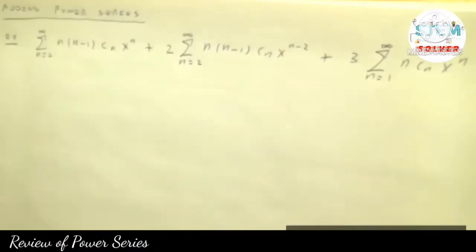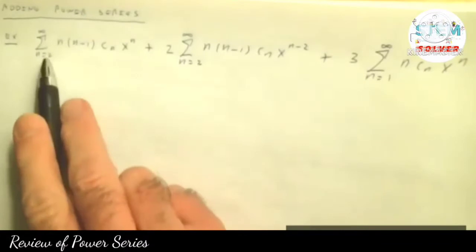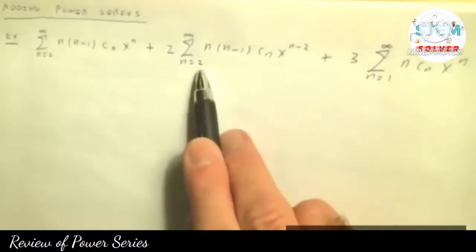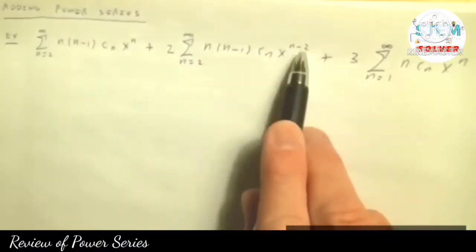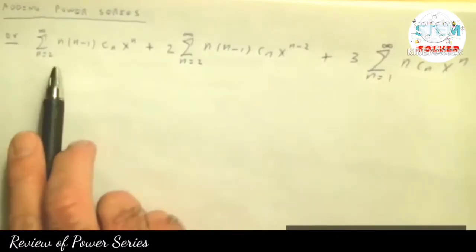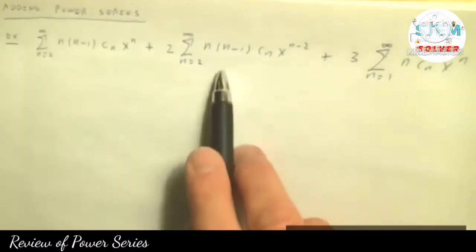So there are two main things to do here. What you're going to do first — and you want to do this first — is what's called running out terms. You want the power series to start with the same power. If I look at the first one, n starts at 2, so when I plug in 2, I get x squared. In the second one, n is 2, so I get x to the 0. I plug in 1 to the last one, I get x to the first. So the highest one we start with is x squared. So you want to run out terms until they all start at x squared.